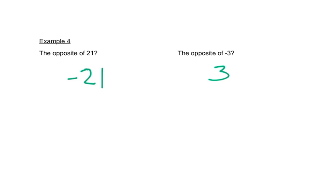Remember, the opposite just means change the sign. So the opposite of twenty-one would be negative twenty-one, and the opposite of negative three would just be a positive three.